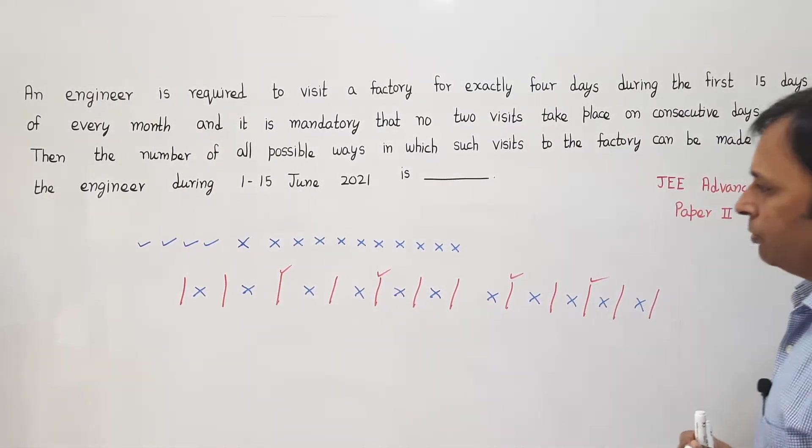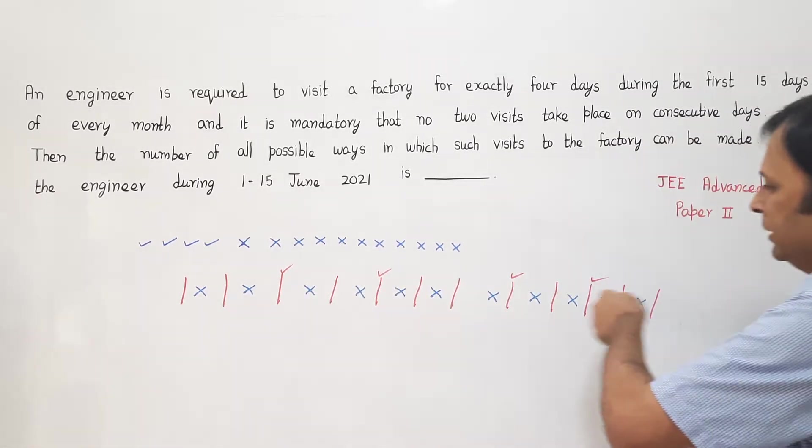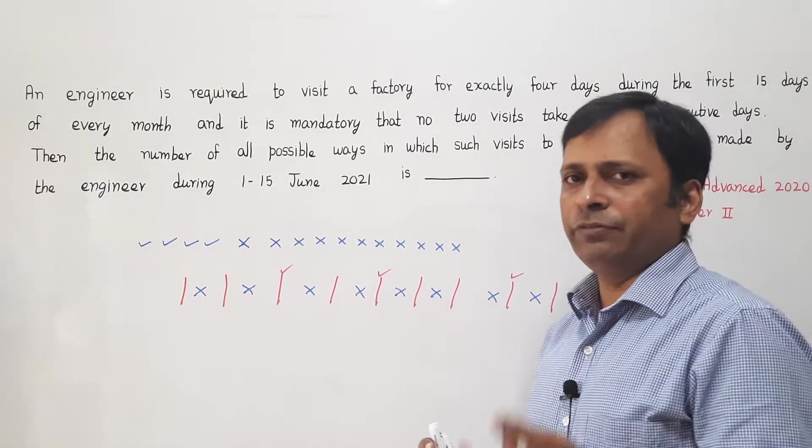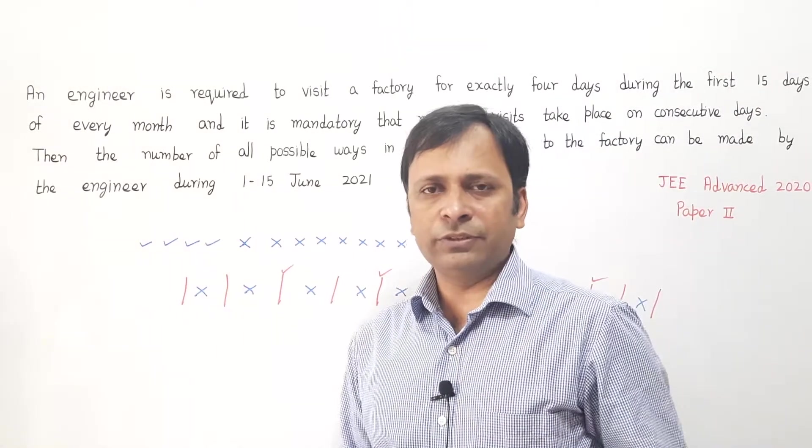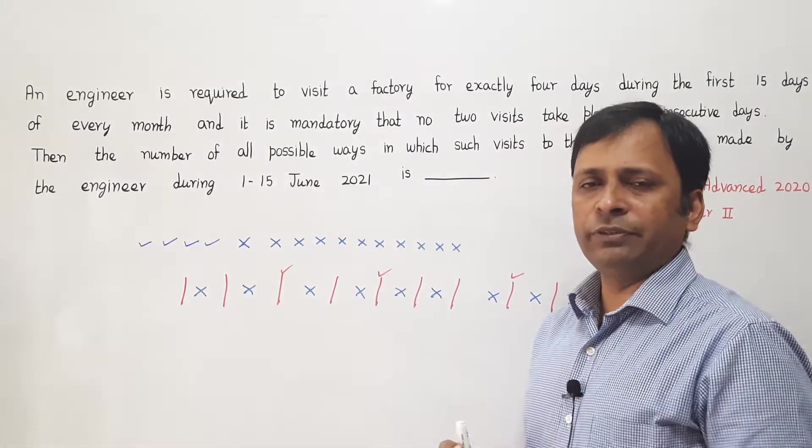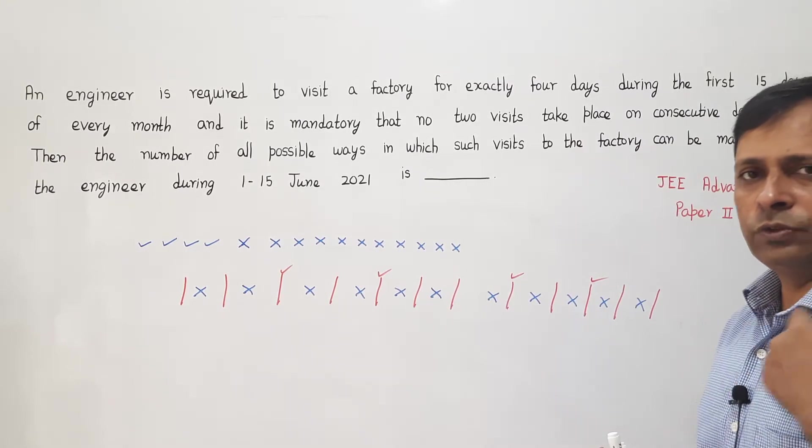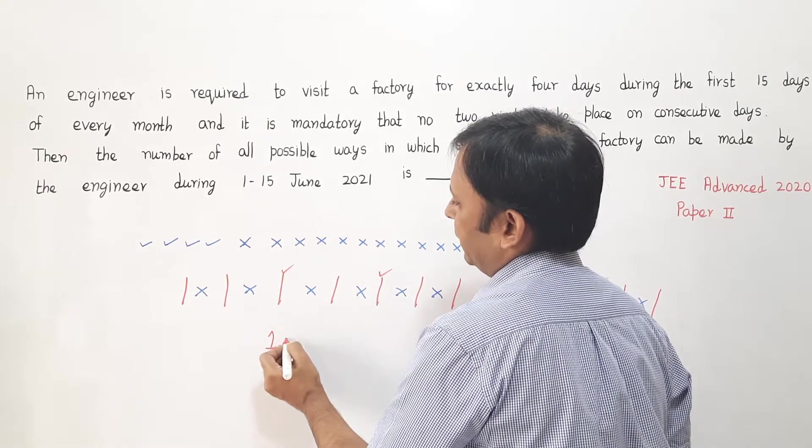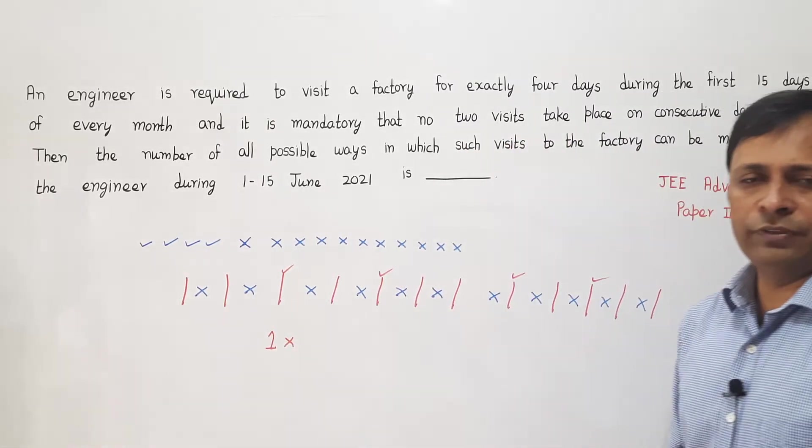Now, how many ways can I place 11 crosses? Because all the crosses are exactly the same, that would imply the engineer has not made any visit. There is no distinction between any 2 crosses. So there is only 1 way to arrange these 11 crosses.